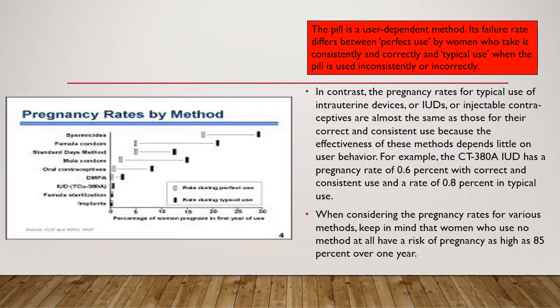As depicted in this chart, contraceptive failure can occur with any method; however, some methods are more effective than others. The slide shows pregnancy rates for various contraceptive methods. The grey rectangles show pregnancy rates for perfect use, reflecting how often a method fails when used correctly and consistently. The black and blue rectangles show pregnancy rates for typical use, which reflects real-life situations when the method may not always be correctly or consistently used. Typical use rates vary amongst user characteristics, user behaviour, and the adequacy of counselling and access to resupply.